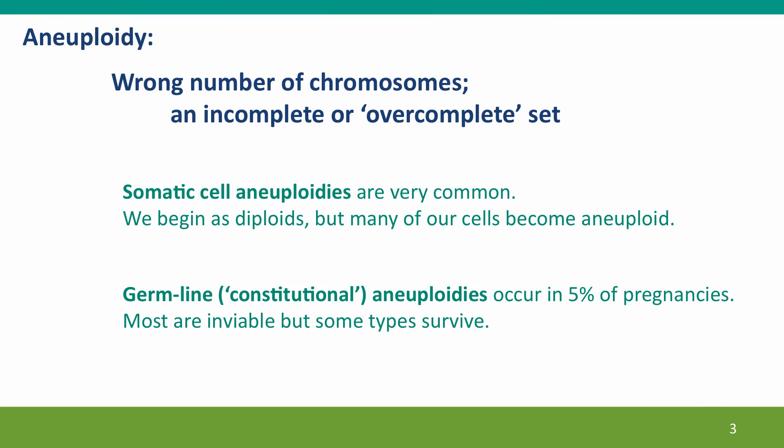Aneuploidy refers to a condition where cells have the wrong number of chromosomes — specifically not the wrong number of complete sets of chromosomes, but the presence of an incomplete set, a set that's missing one or more of the chromosomes it should have, or what I've been calling an over-complete set, a set that has more than one copy of one or more of the chromosomes.